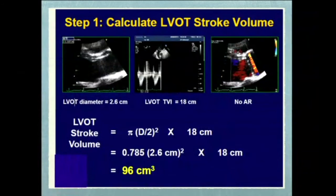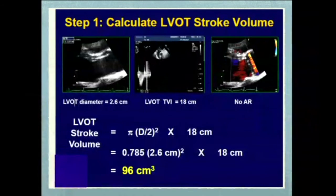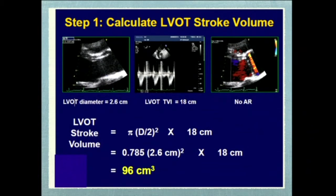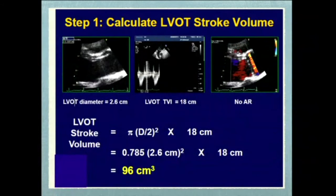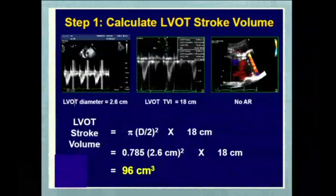For example, if the LVOT diameter is about 2.6 cm and the LVOT VTI is about 80 cm — remembering there should be no moderate-plus AR — putting these parameters into the calculation: pi times R squared gives cross-sectional area, multiplied by VTI gives stroke volume of 96.3 mL. It is very important that VTI tracing is accurate — exaggerated or shortened tracing will lead to wrong calculations.